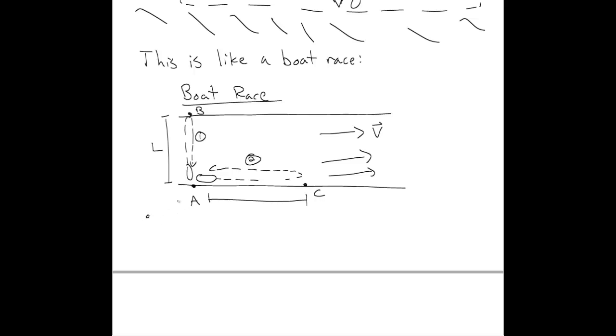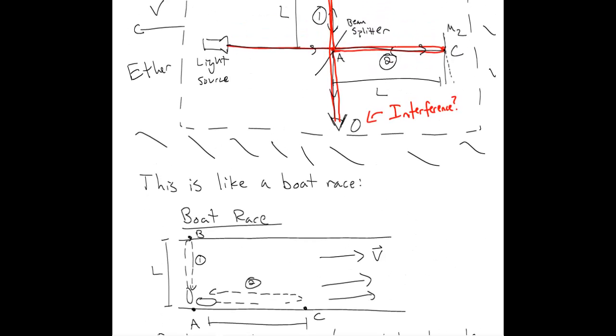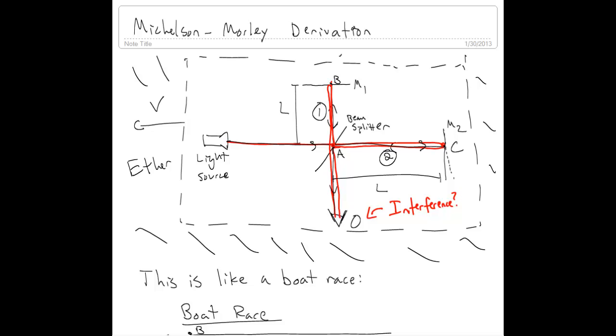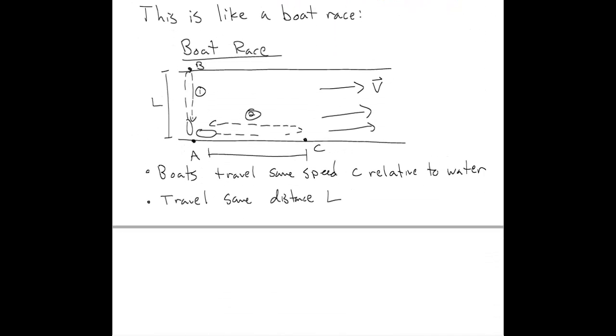And we're told two things. We're told that the boats travel the same speed, C, relative to water, and the boats travel the same distance, L. And what we'd like to know, which is important for understanding the Michelson-Morley experiment, is which boat wins.